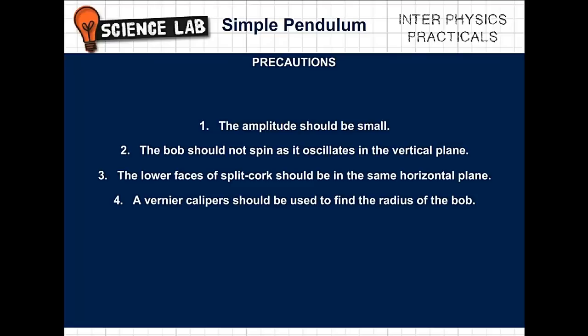Precautions: 1. The amplitude should be small. 2. The bob should not spin as it oscillates in the vertical plane. 3. The lower faces of split cork should be in the same horizontal plane. 4. A vernier caliper should be used to find the radius of the bob.